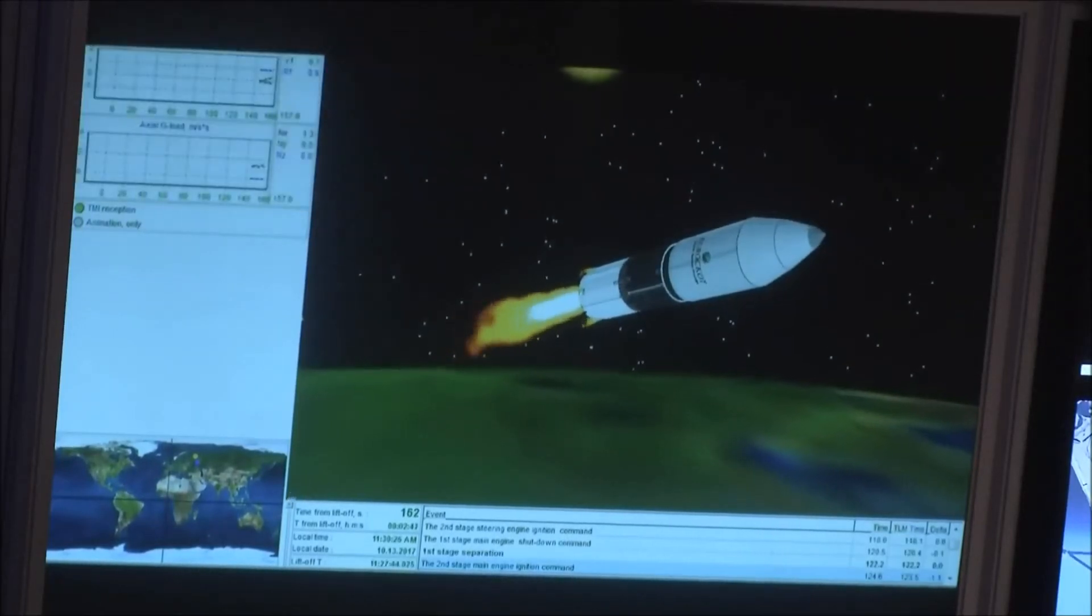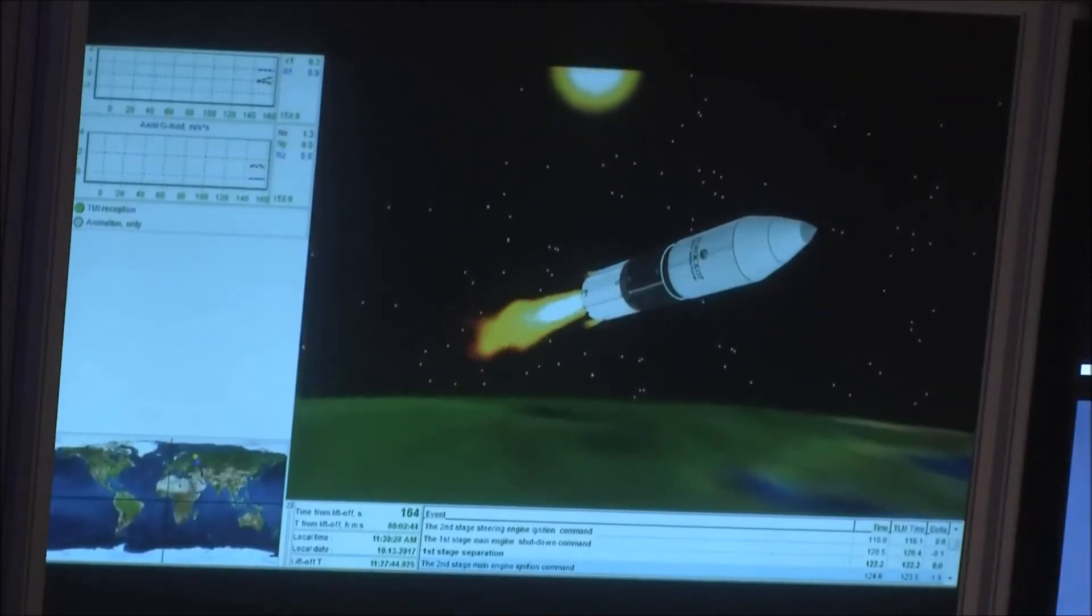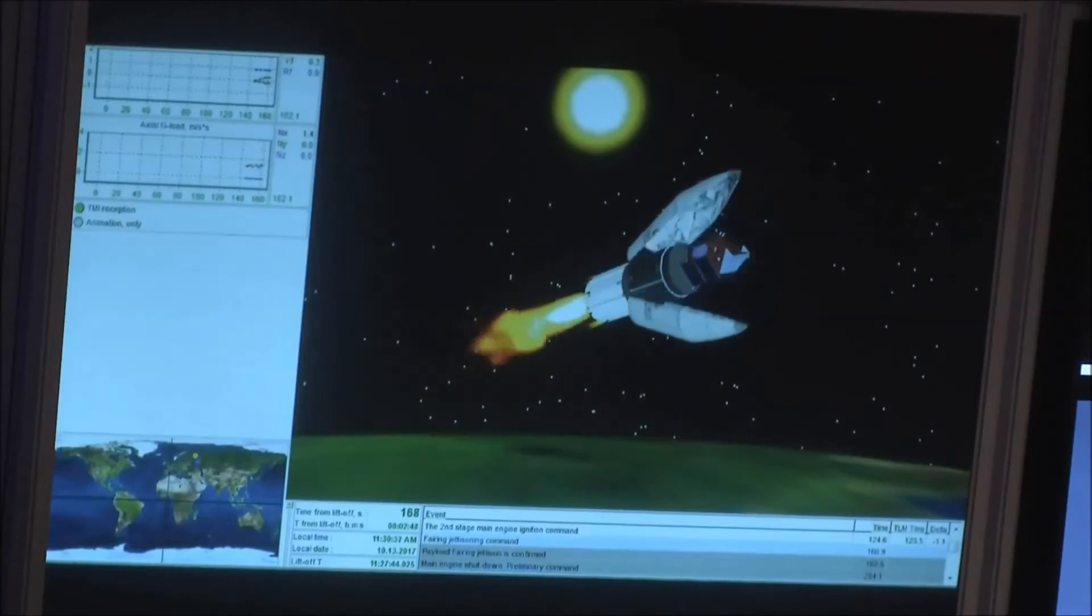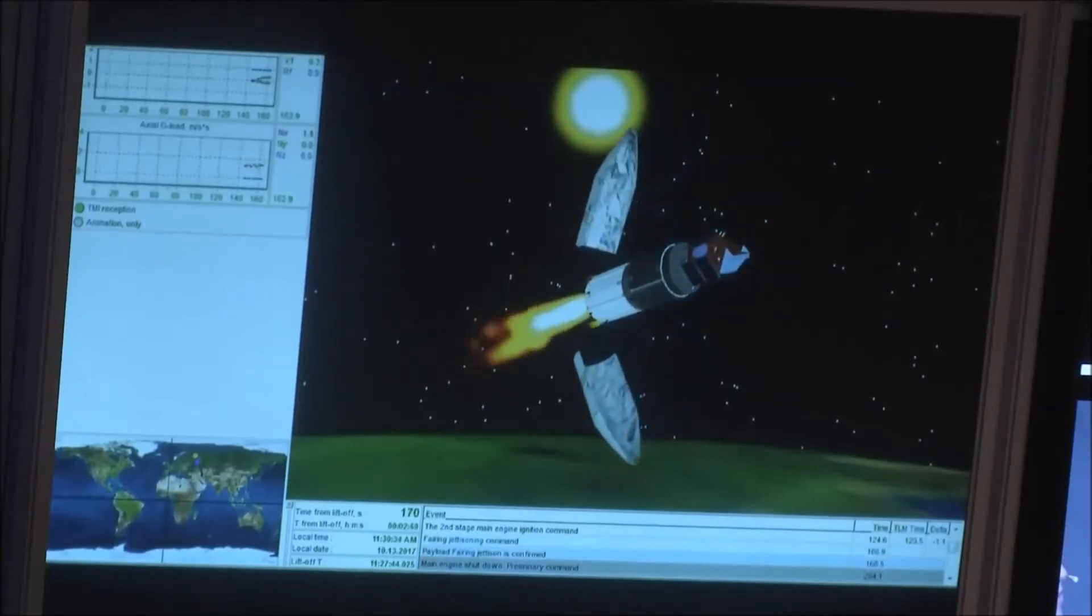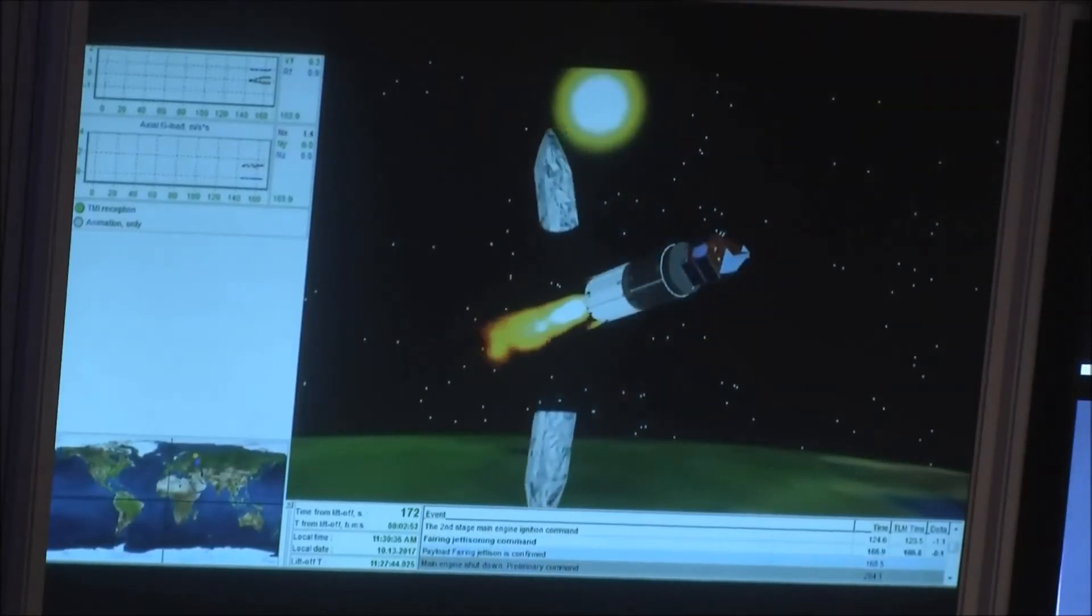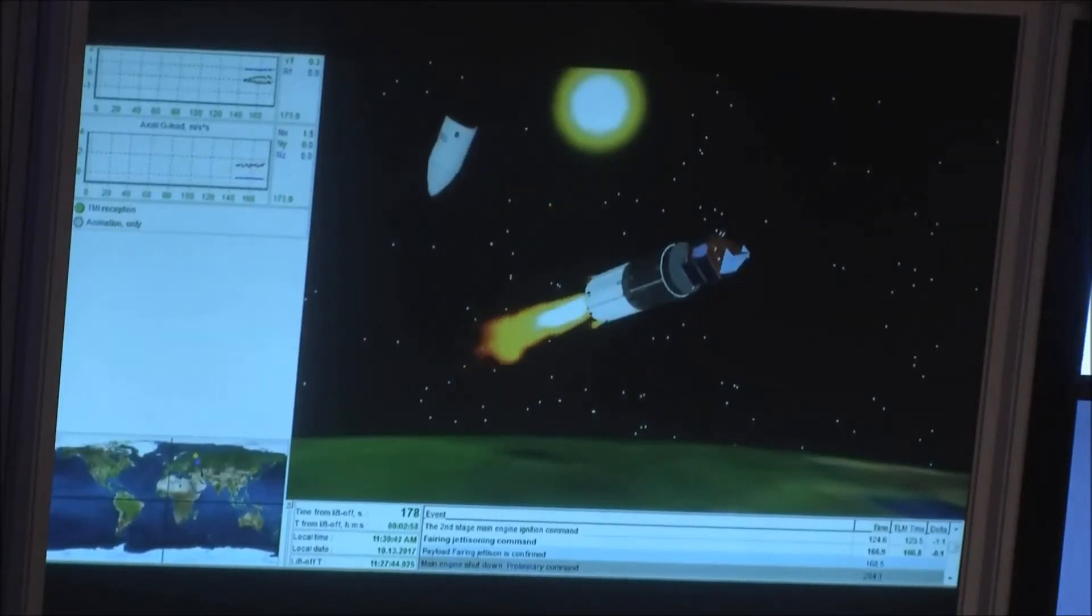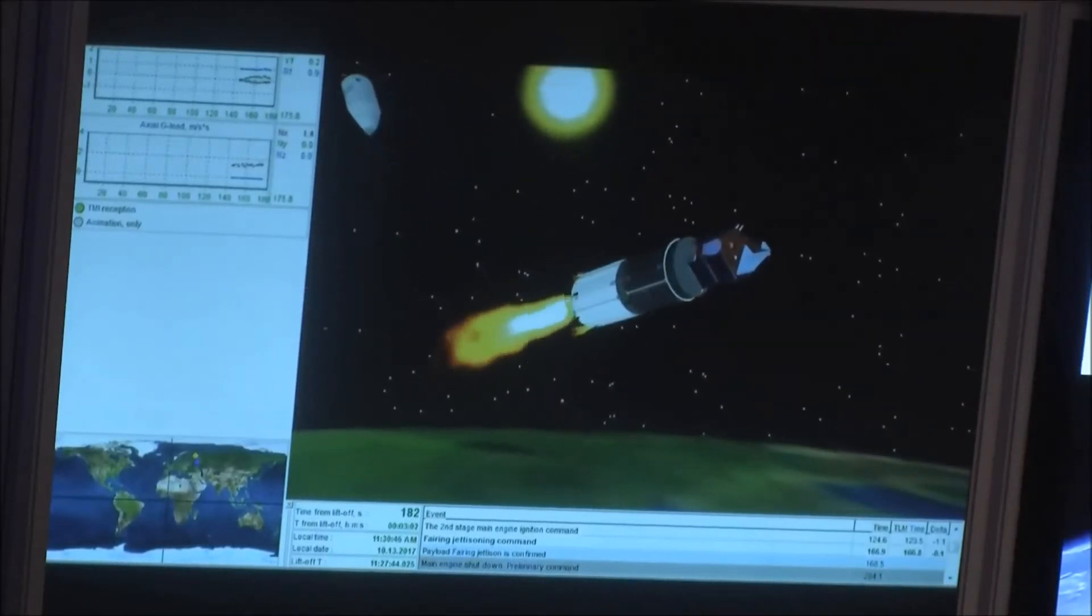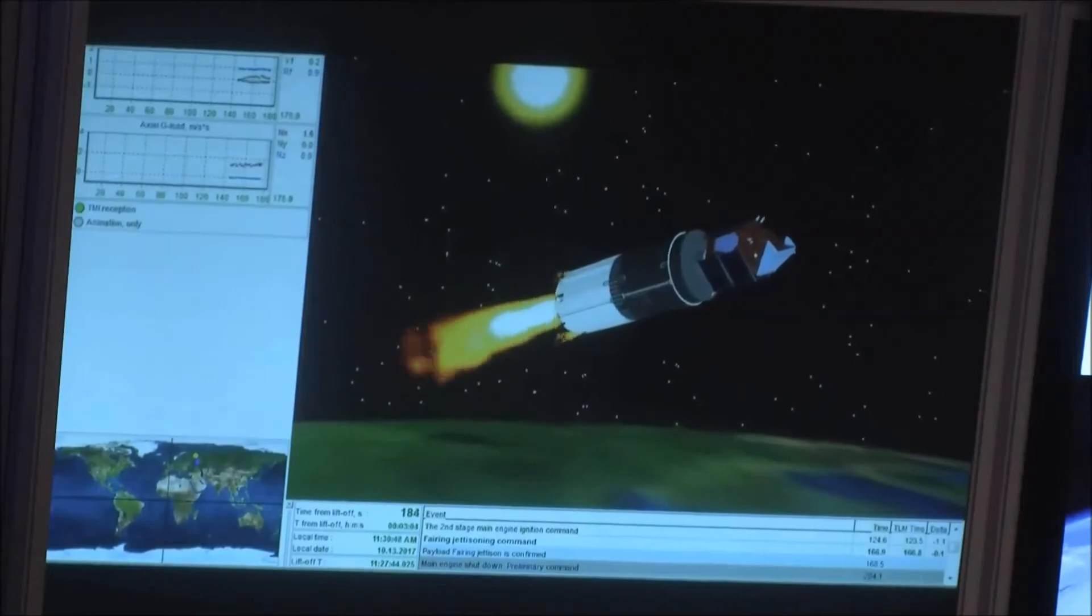And the fairing, that's at the front of the launch vehicle. The pointy bit there, that's where our satellite is housed. That's been protecting us up until now. And we don't need it anymore because we are technically on the edge of space. So we're about 100 kilometres above the earth. It's called the Kármán line. It's where space begins. And we can see your satellite, guys, for the first time there.